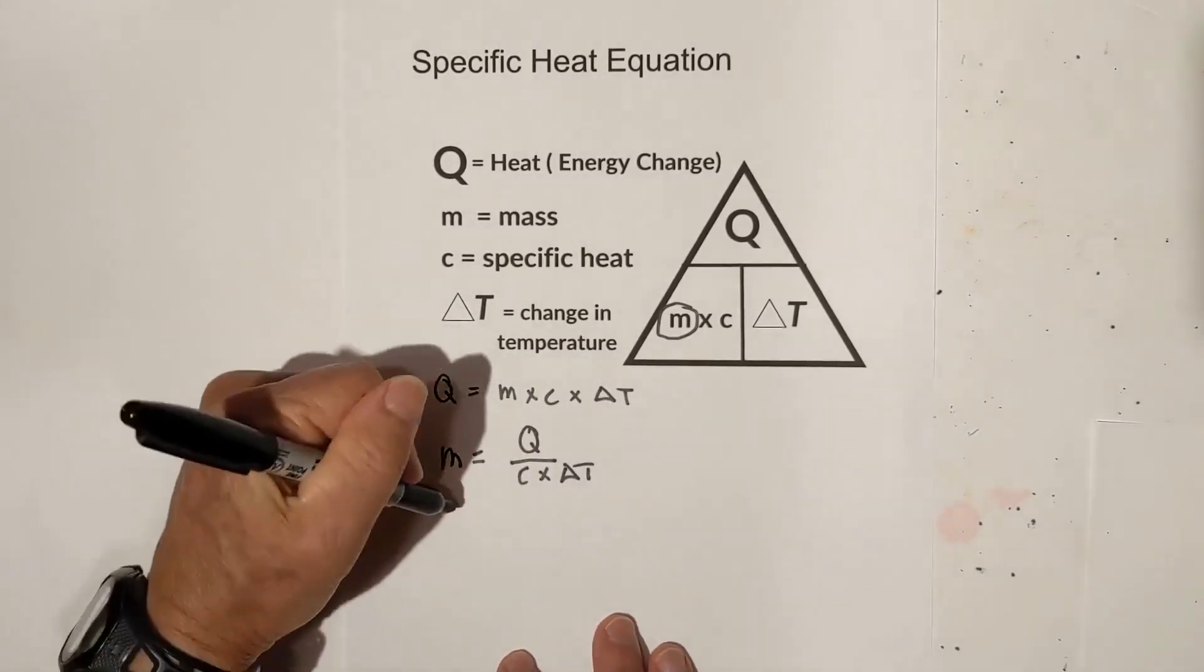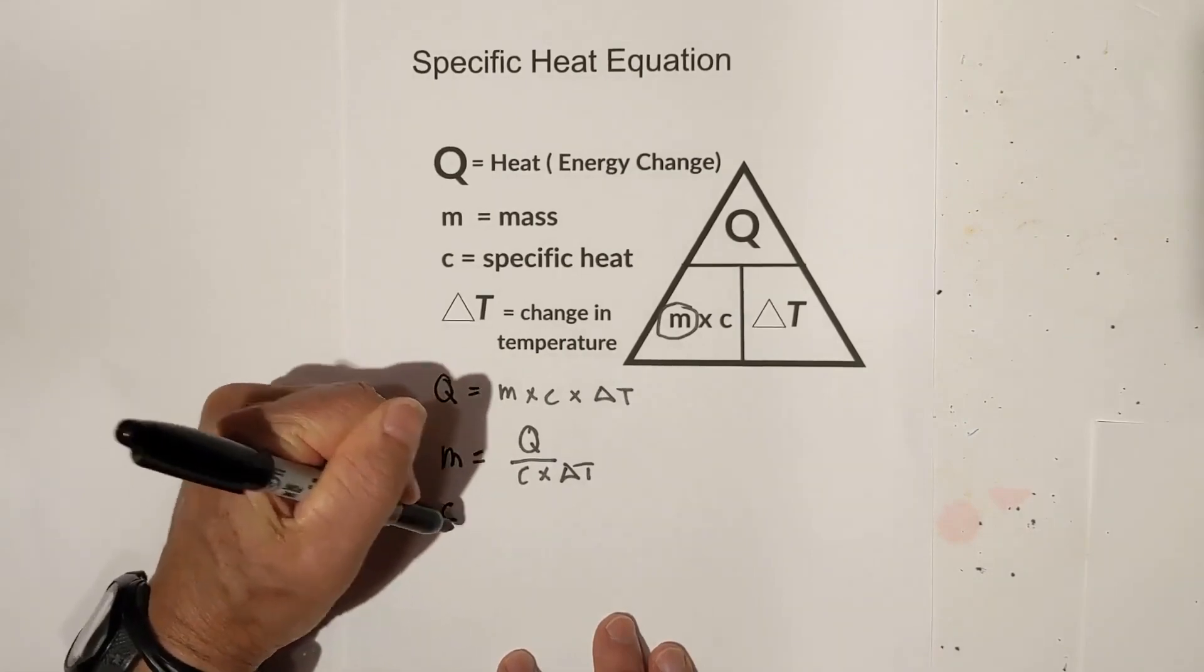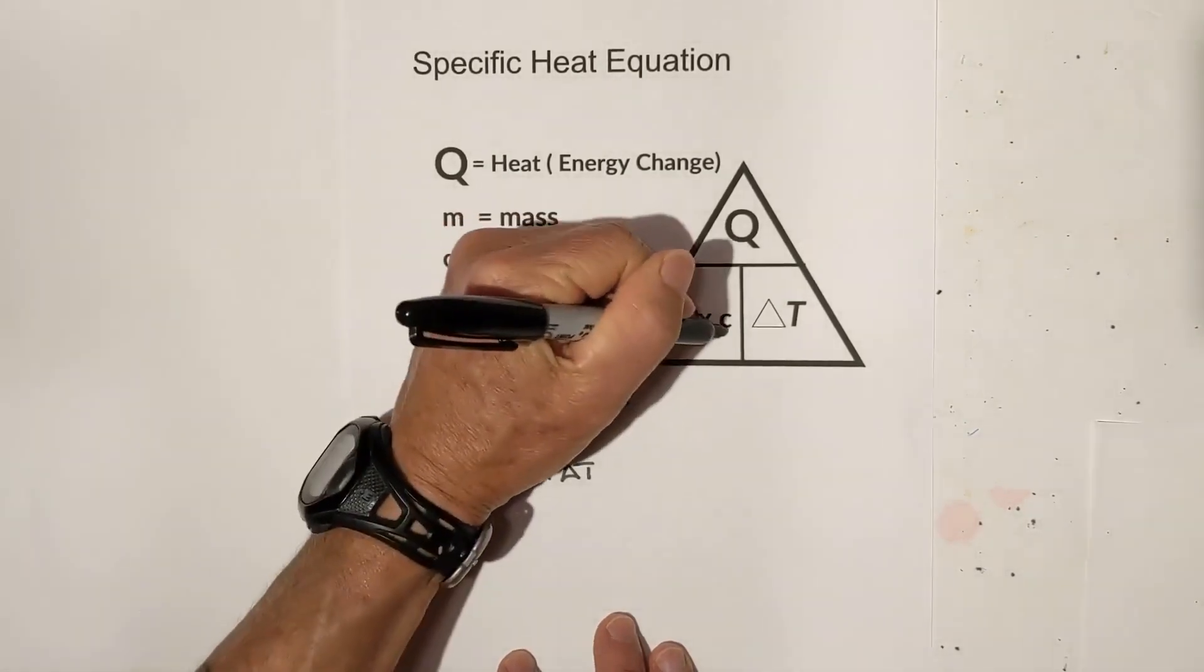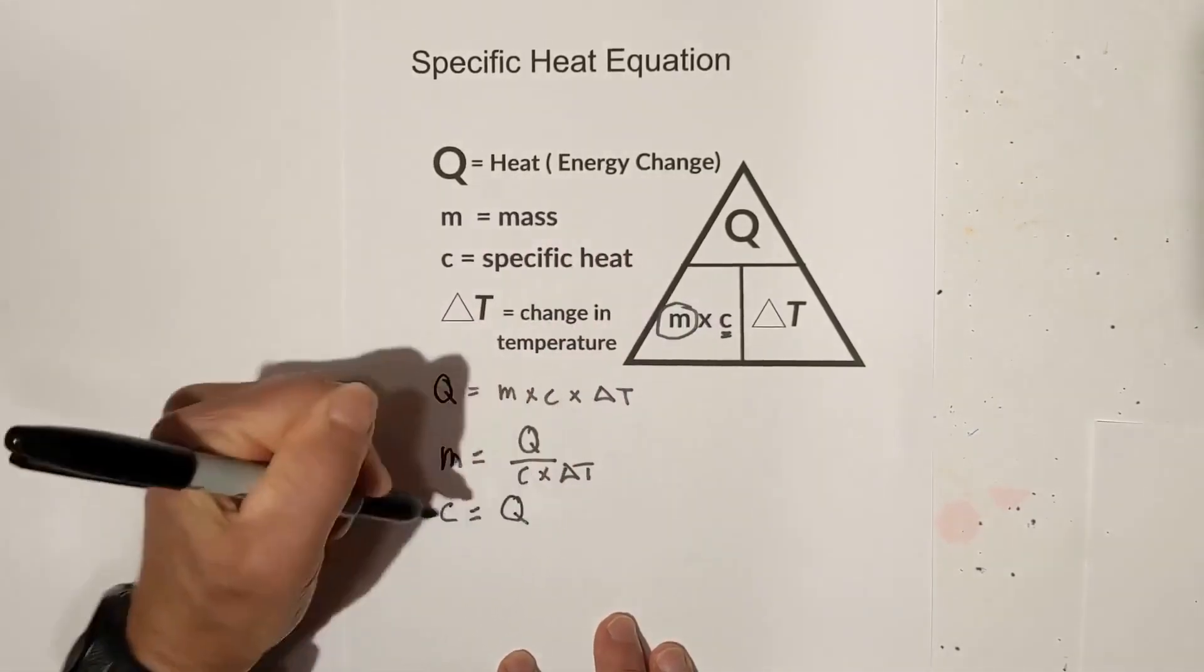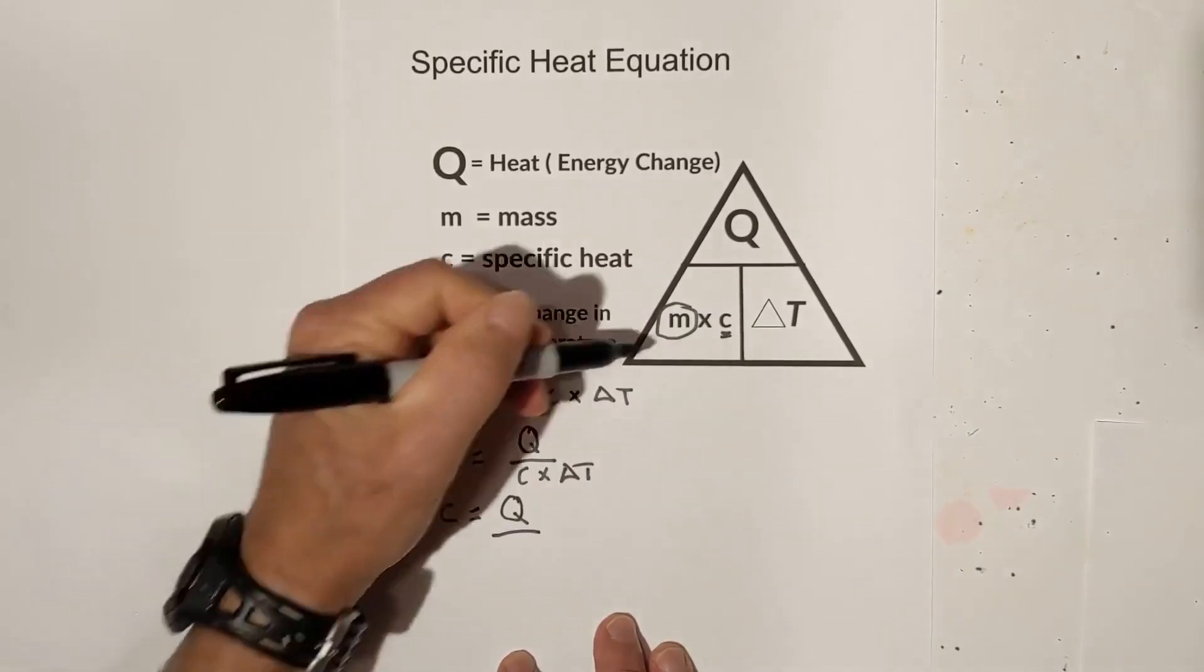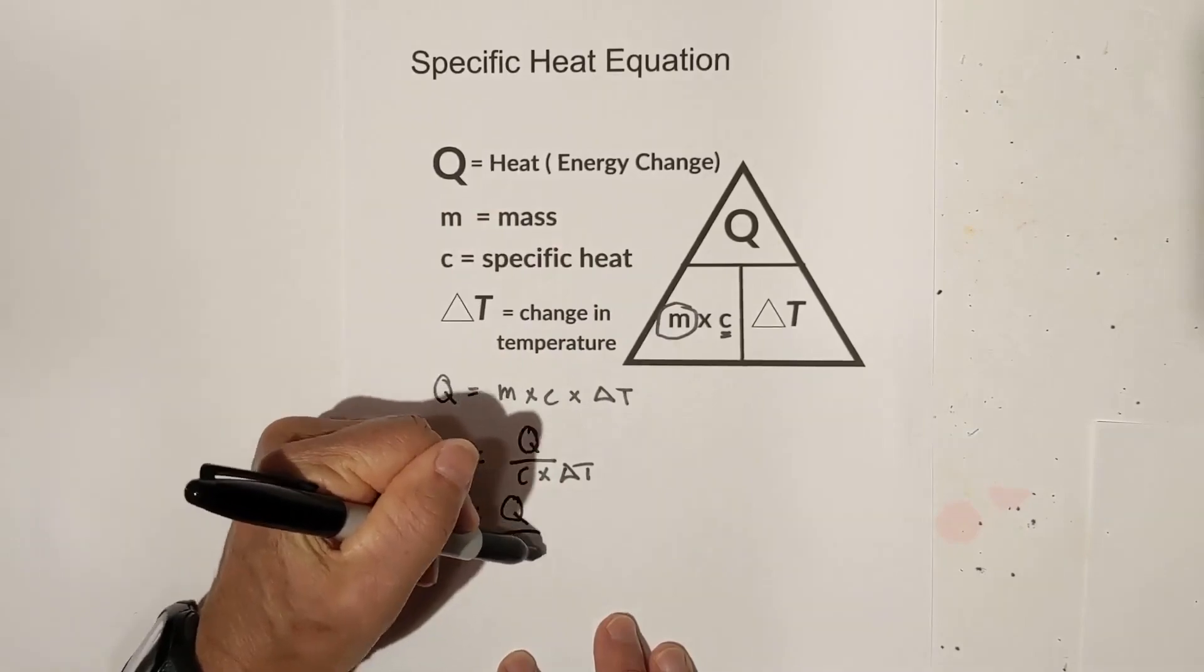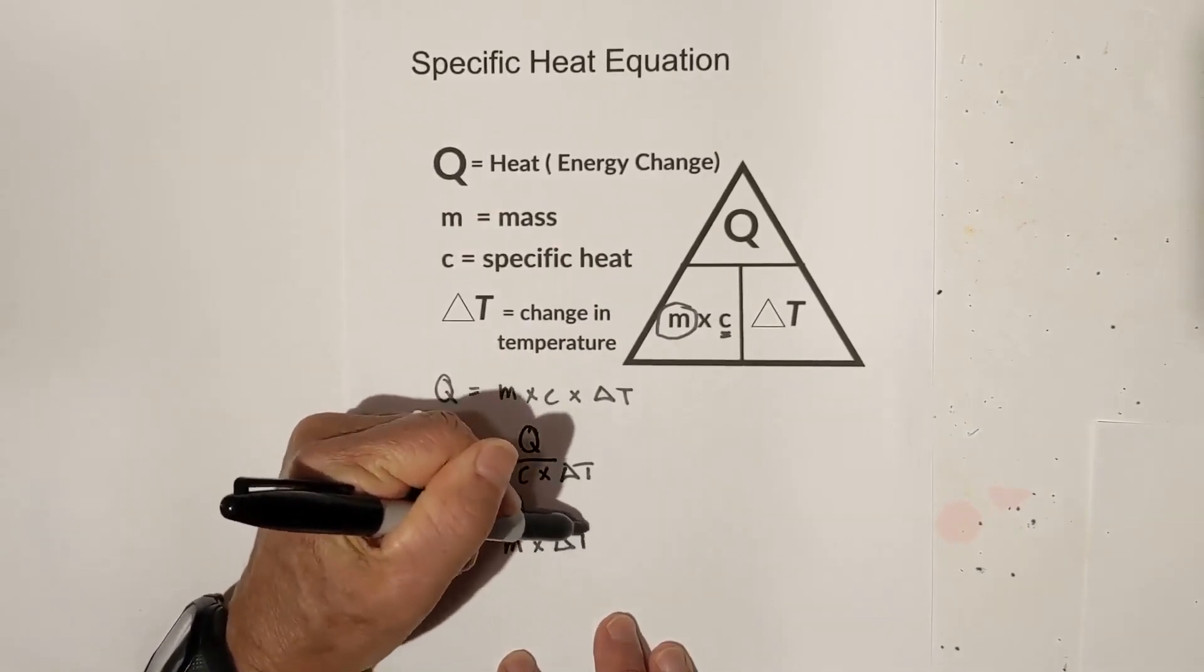How about if I want to know specific heat? Same thing—you pull out specific heat. Specific heat equals Q over M times change in temperature.